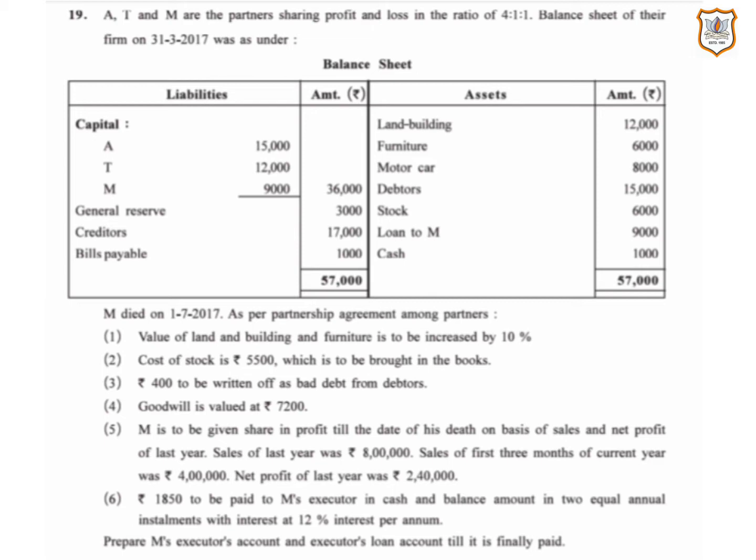The firm's balance sheet is given as on 31st March 2017. M died on 1st July 2017, and as per the partnership agreement among partners, certain conditions are given. We have to prepare M's executor account and executor's loan account.